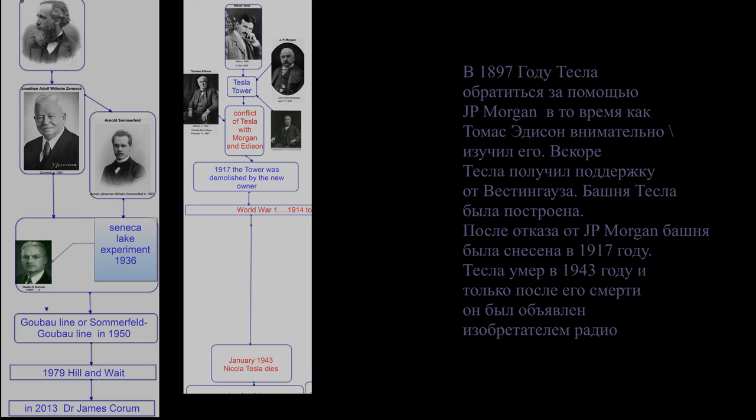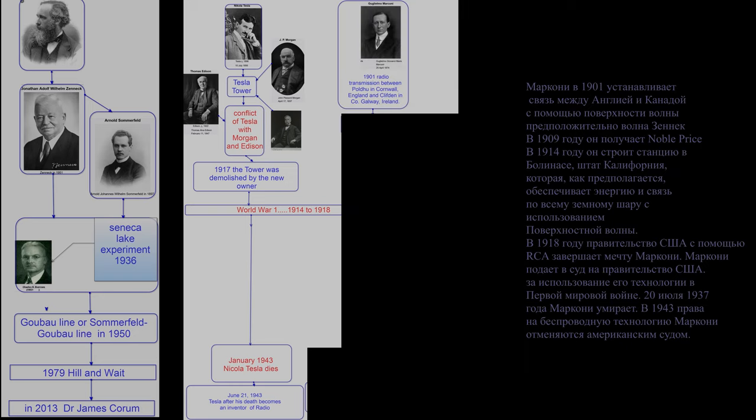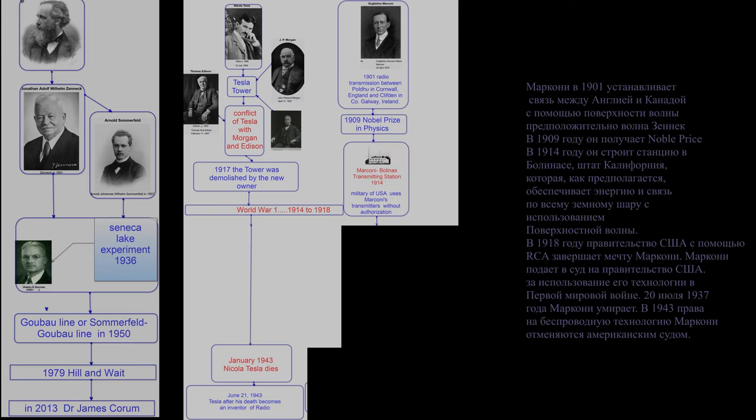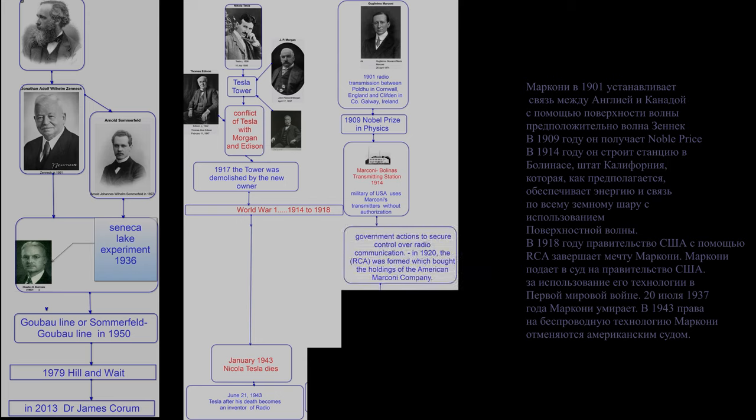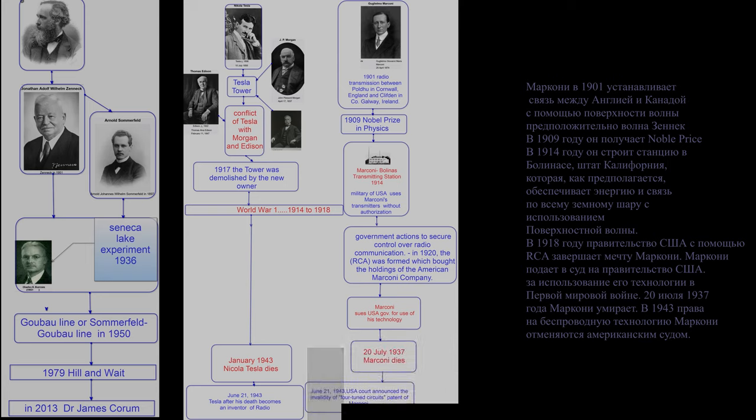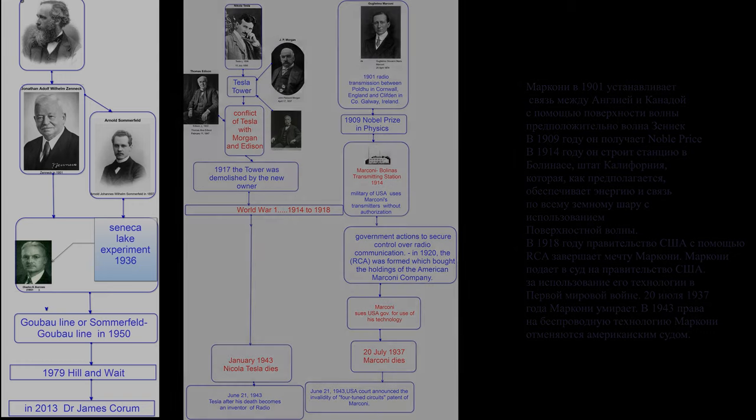Tesla died in 1943 and only after his death he was announced an inventor of a radio. Marconi in 1901 established communication between England and Canada using surface wave, presumably Zenneck wave. In 1909 he received Nobel Prize. In 1914 he built a station in Bolinas, California in a vision to provide energy and communication around the globe using surface wave. In 1919 US government using RCA, the branch of government, to finish Marconi's dream. Marconi started to sue United States government for use of his technology in World War I. In 20th of July, 1937 Marconi dies. In 1943 Marconi writes to wireless technology is revoked by United States court. Purely political.